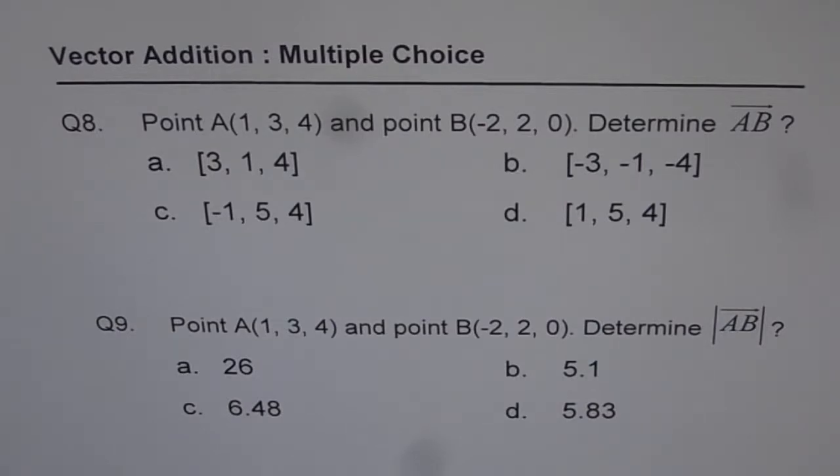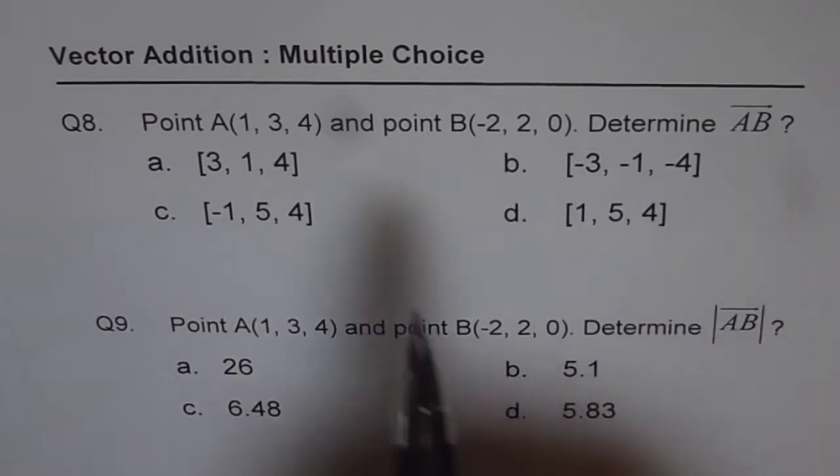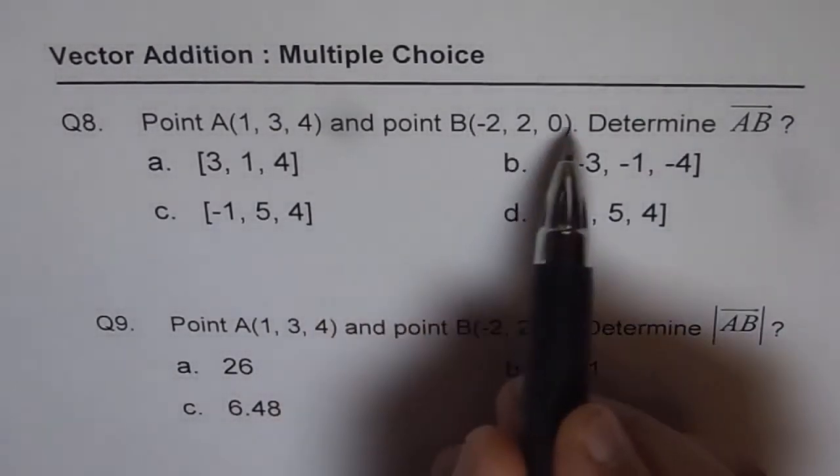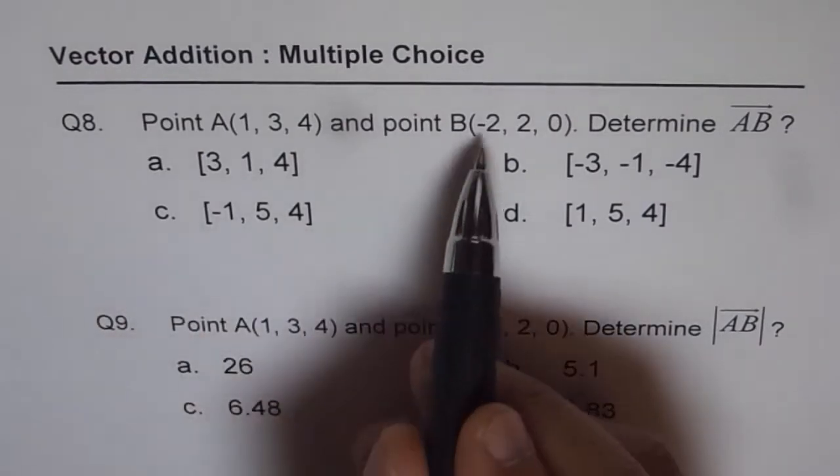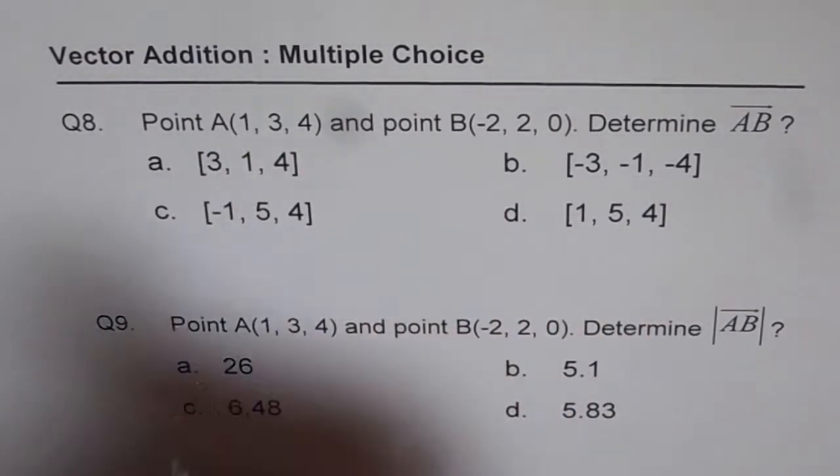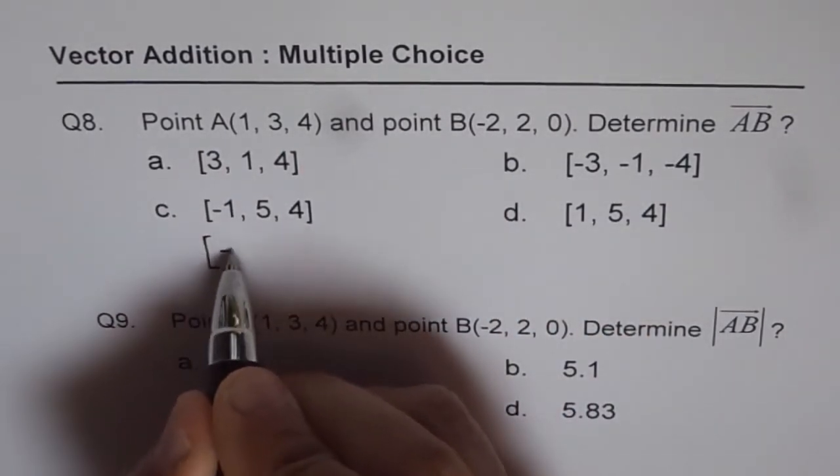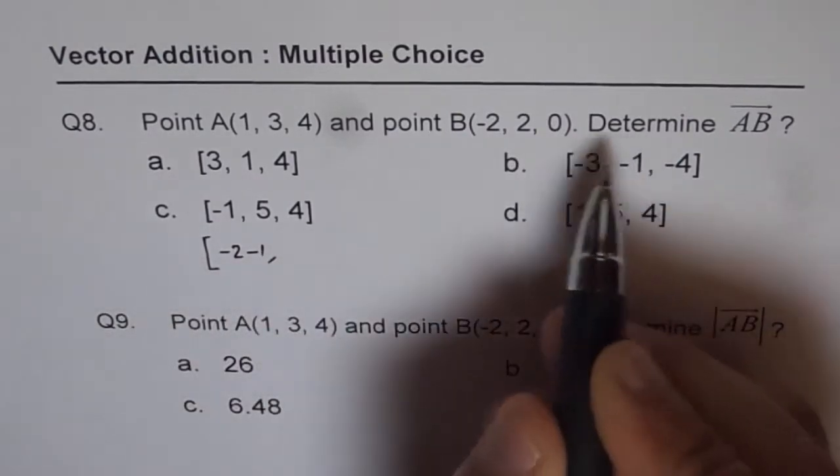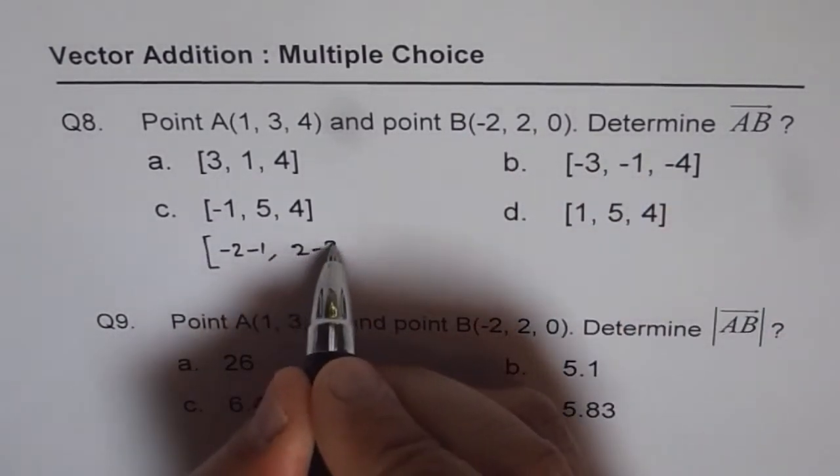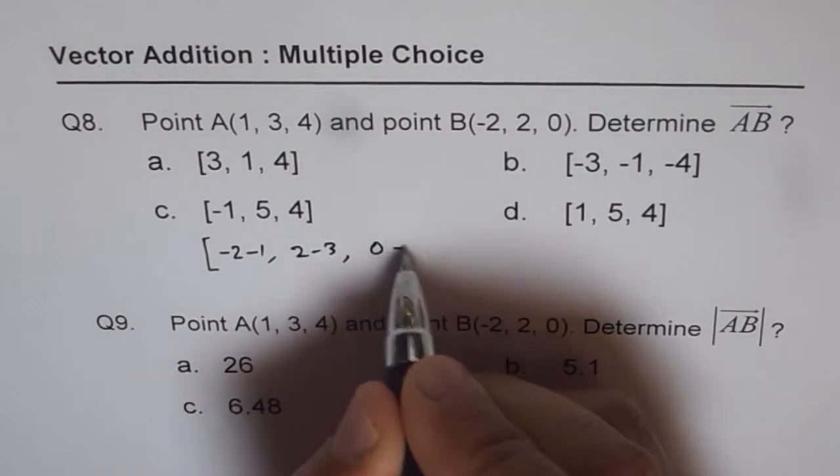Determine vector AB. So vector AB should be B minus A, right? So it is basically -2 minus 1, and then 2 minus 3, 0 minus 4.